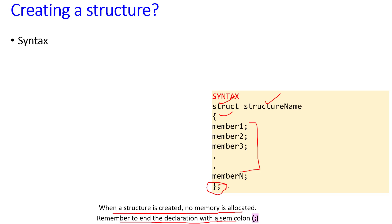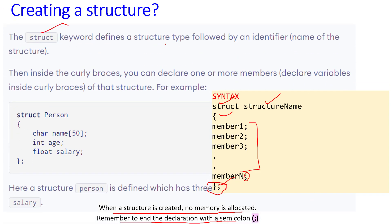Once again regarding the syntax: it consists of struct, struct name, opening braces, member definitions, and closing symbols. When a structure is created, no memory is allocated. Remember to end the declaration with a semicolon. The struct keyword defines the structure type followed by an identifier, the name of the structure. Inside the curly braces, you can declare one or more members.